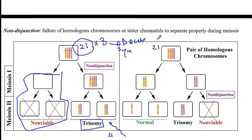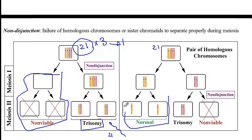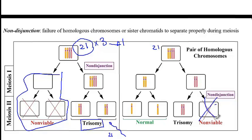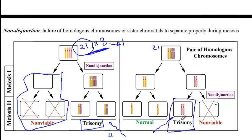Another way of having non-disjunction is during meiosis two. During meiosis one, homologous chromosomes have properly segregated. On one half, sister chromatids also properly segregated, so those eggs yield normal progenies. However, on the other side there was a non-disjunction, so half of those gametes will be non-viable. The other half, since they have an extra copy, once combined with sperm would give rise to three copies of chromosome 21 — an example of Down syndrome.